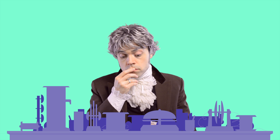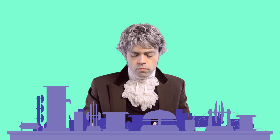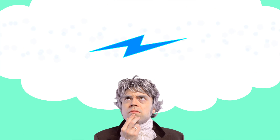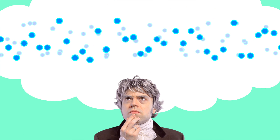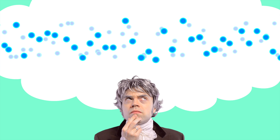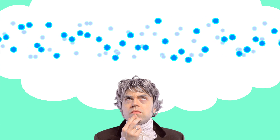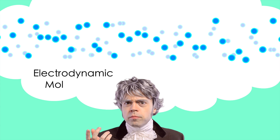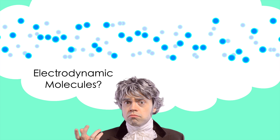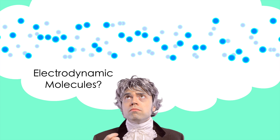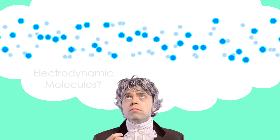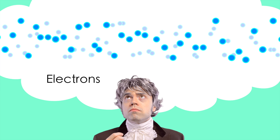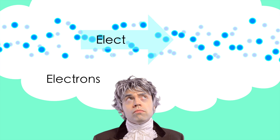The results of his experiments showed Mr. Ampère that electricity is created by the movement of many teeny objects, which are so small we can't even see them — electrodynamic molecules. Nowadays, we call these teeny objects electrons. And when electrons move, we call that electrical current.